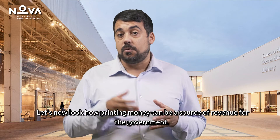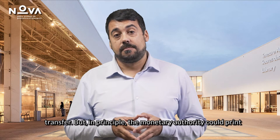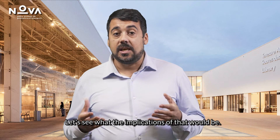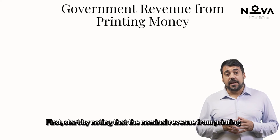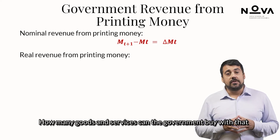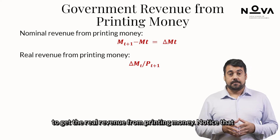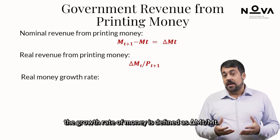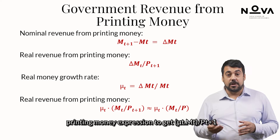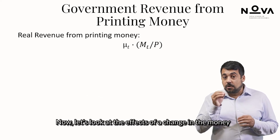Let's now look at how printing money can be a source of revenue for the government. So far, we have assumed that the monetary authority prints new money and distributes it to households as a lump sum transfer. But in principle, the monetary authority could print money and give it to the government for purchases of goods and services. First, note that the nominal revenue from printing money is given by the difference in nominal money balances between two periods. Dividing by the price level in T plus one gives the real revenue from printing money. The growth rate of money is defined as delta MT over MT. Using that to substitute out delta MT, the real revenue from printing money expression becomes mu T times MT over PT plus one.